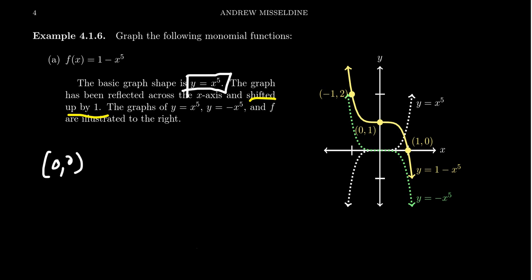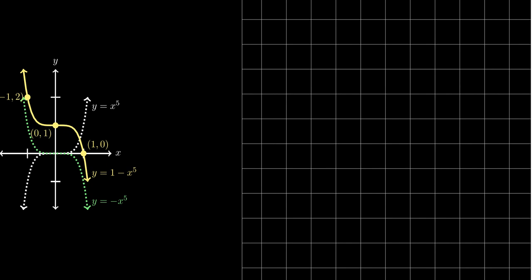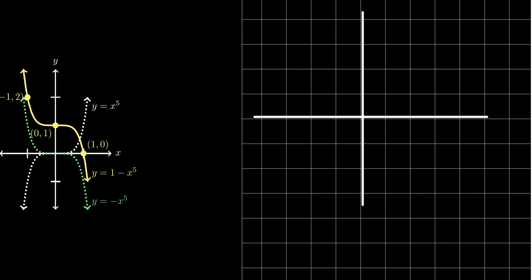Like if you take the origin, if you reflect the origin across the x axis, it doesn't change because reflection across the x axis means you're going to multiply the y coordinate by negative one. If you then shift everything up by one, you're adding one to the y coordinate, and you're going to get the point zero comma one. The vertex of this power function started at the origin, you reflect it which doesn't do anything, then you move it up by one to get the point zero comma one.